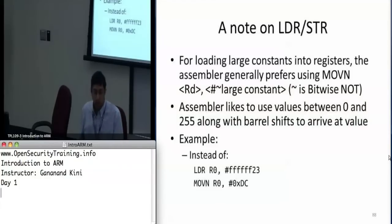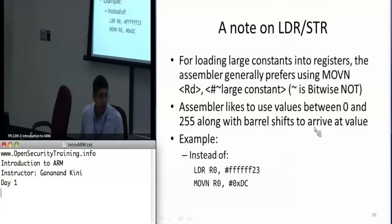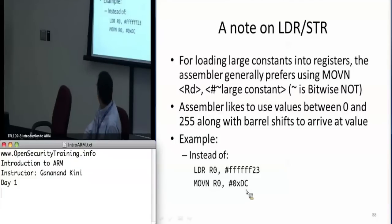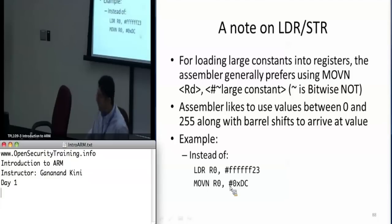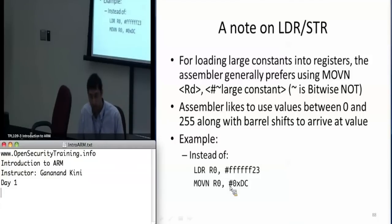For loading constants into registers — especially very large constants — the assembler prefers to use MVN (move negative). So instead of writing LDR R0 with a large number, the assembler takes the one's complement and uses that instead — it will do a move negative of the complement value and put that in R0. This is just an optimization the assembler performs.